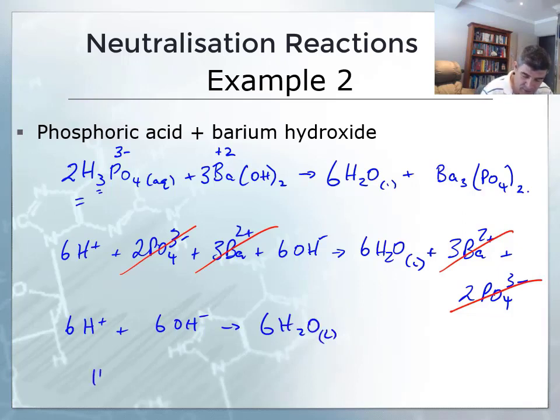And of course, I could simplify this down to H plus, plus OH minus gives H2O. One of the key things that we need to look at with these neutralization reactions is that net ionic equation just comes down to the hydrogen ions plus the hydroxide ions producing water.